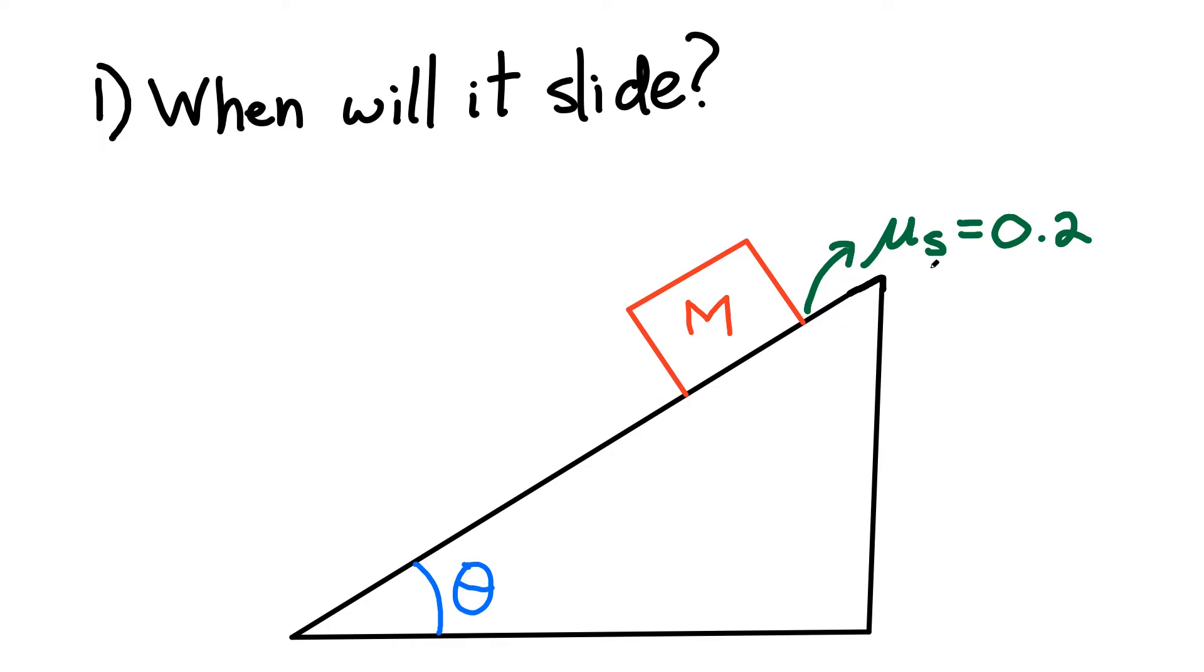We're going to assume that there's a coefficient of static friction equal to 0.2. The block has a mass m. And the angle theta, we're going to increase the angle theta until it begins to slide.